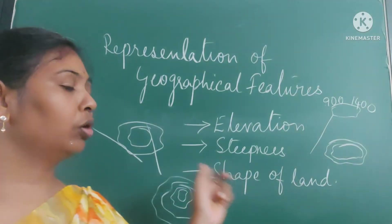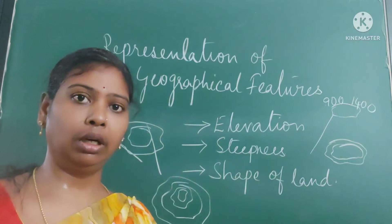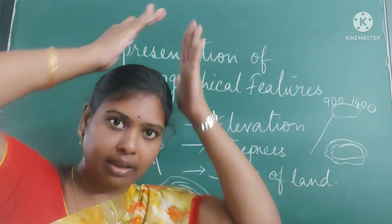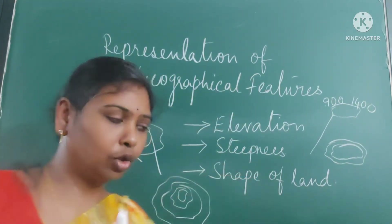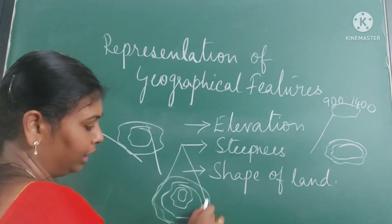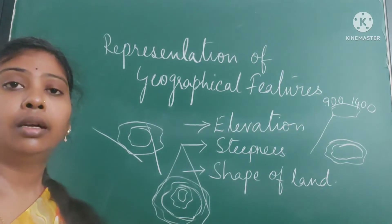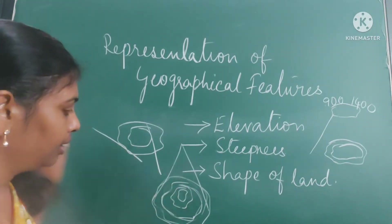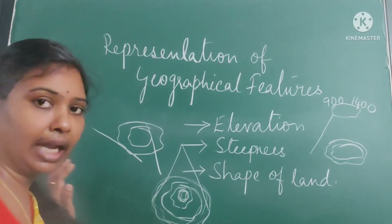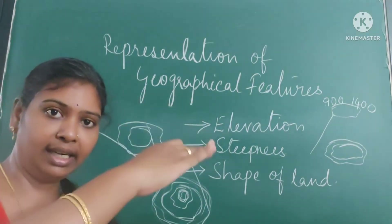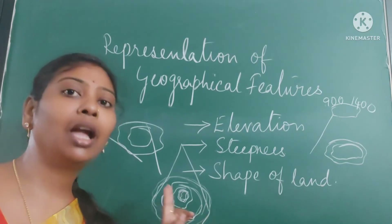Generally, contours are a 2D representation of a 3D landform. When we go for parties we use a party cap — that triangular party cap becomes conical. So this is the example of a contour. Here it becomes very steep, and here it becomes a little gentle. This is how we represent a 3D landform in a 2D form. The shape of the land is also represented by a contour.